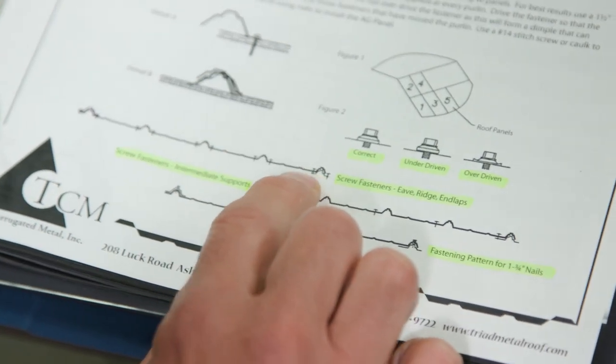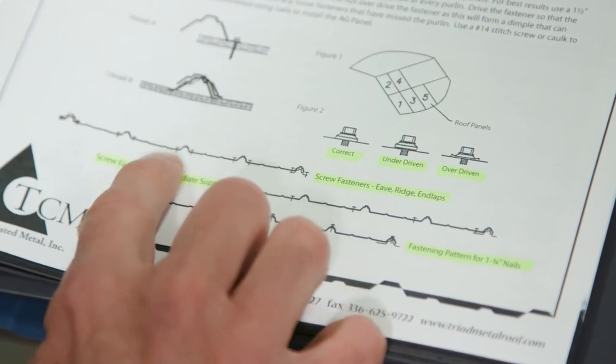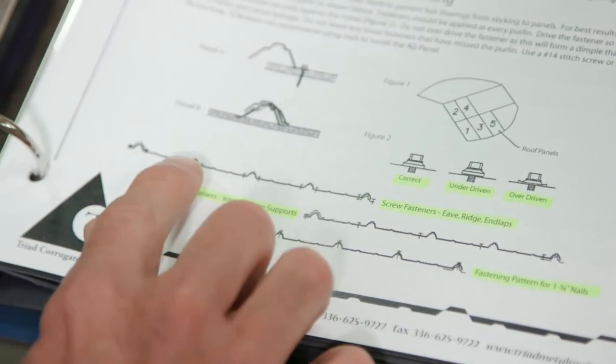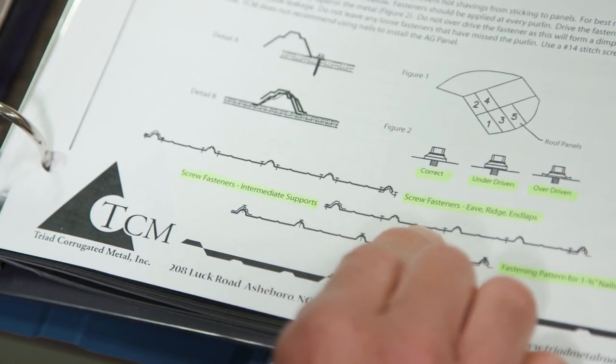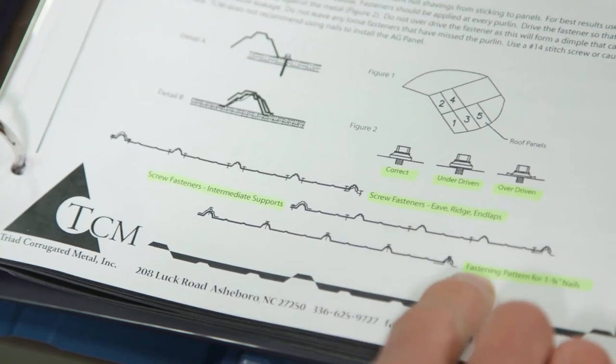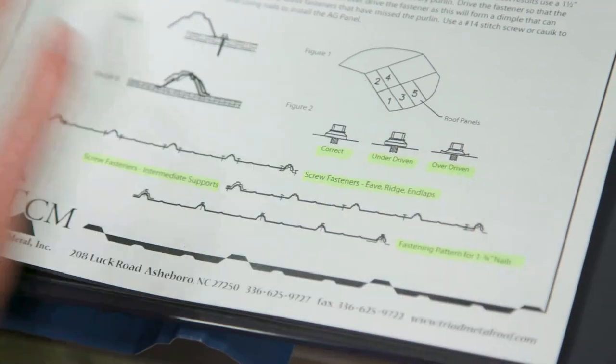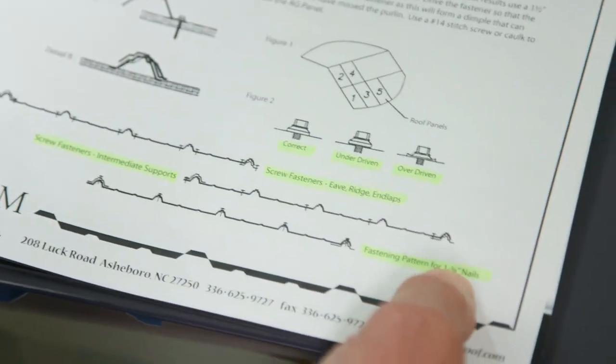I hope it's not too hard to see here. This one's a little different, but it's right beside of every high part. Never did they put it in the high part. Same thing here. Intermediate supports, right beside every high part. Down here, they do a fastening pattern from this place for one and three quarter inch nails.